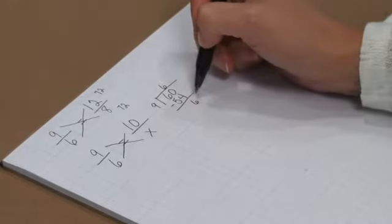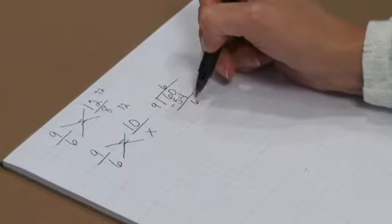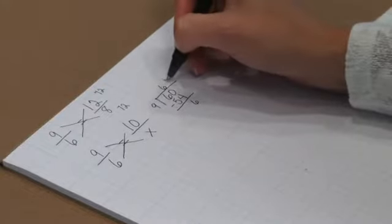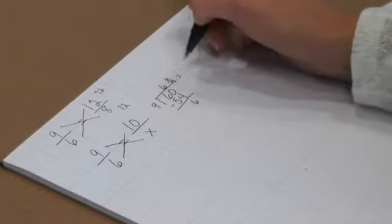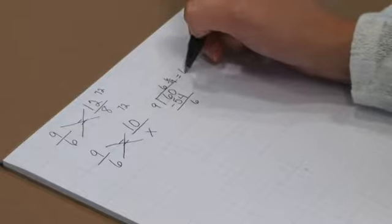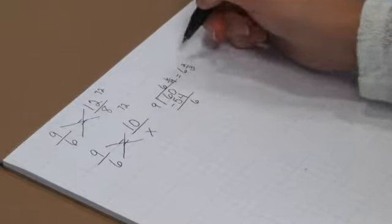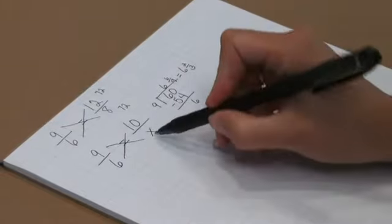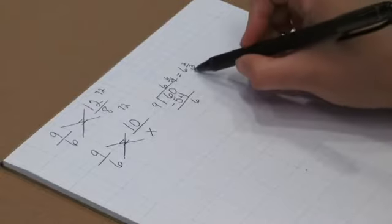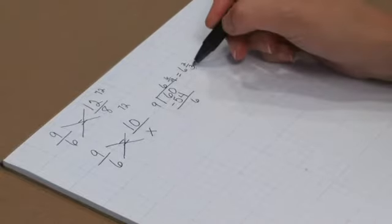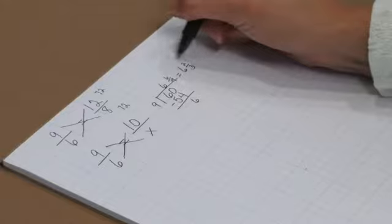So we have a remainder of 6, or 6 ninths, and we can reduce that to 2 thirds. So now we know that our missing denominator x is equal to 6 and 2 thirds. And I may point out to the student that instead of just leaving the remainder, we were able to use it as a fraction.